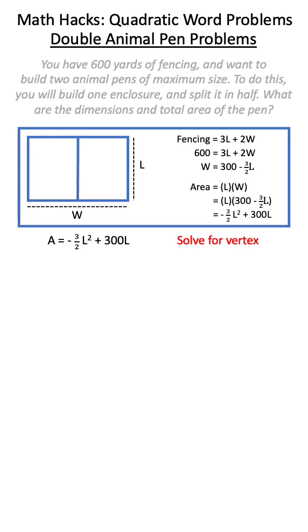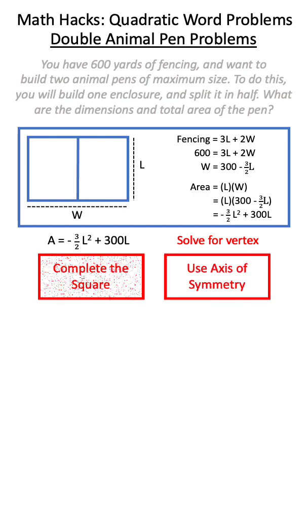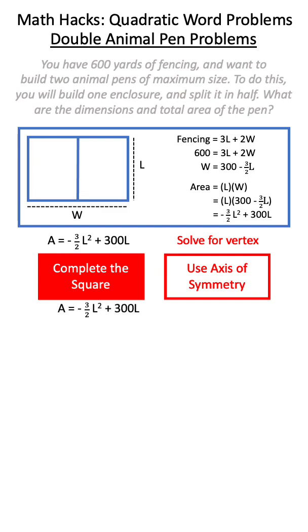Now what we can see is we just need to solve for the vertex. We can do this through completing the square or through using the axis of symmetry. Let's opt to use completing the square.